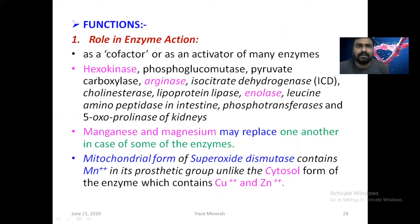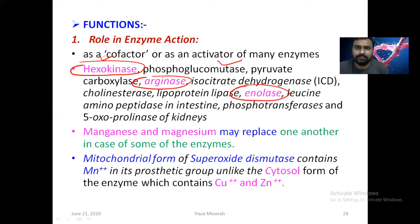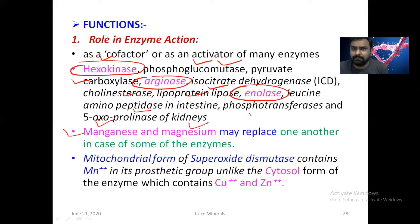This is called transmanganese — just remember. Manganese has a role as a cofactor or activator of many enzymes. The most important are Hexokinase, Arginase and Enolase. It is also present in isocitrate dehydrogenase, Phosphoglucomutase, Pyruvate Carboxylase, Polynucleotidase, Lipoprotein Lipase, Leucine Aminopeptidase, Phosphotransferase and 5-oxoprolinase. Manganese and Magnesium may replace one another in some enzymes, for example Hexokinase, Pyruvate Carboxylase and Enolase.